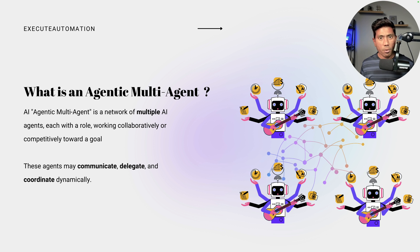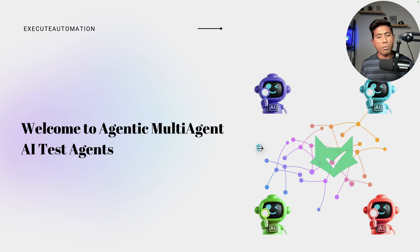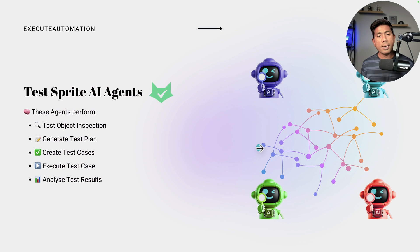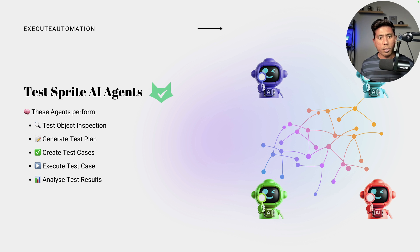With all this information in place, we are now going to see how AI agents in software testing can be done, and this can be achieved with the power of Test Sprite. Test Sprite is an agentic multi-agent AI test system — a collection of test agents — that will do these operations for us. It can perform test object inspections, generate test plans, create test cases, execute them, and analyze test results. All of these operations are done by an army of AI agents sitting in the Test Sprite cloud, and that is the real power of this system.